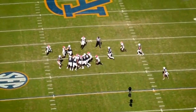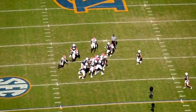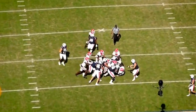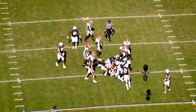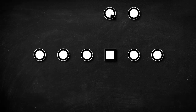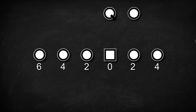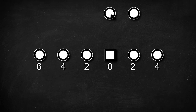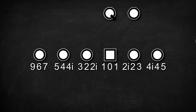Defenses usually put 3 or 4 defensive linemen down to fill the gaps. Their positioning or techniques are communicated through a numerical system going outward, where even numbers place the defender head up and odd numbers place them shaded towards a gap.